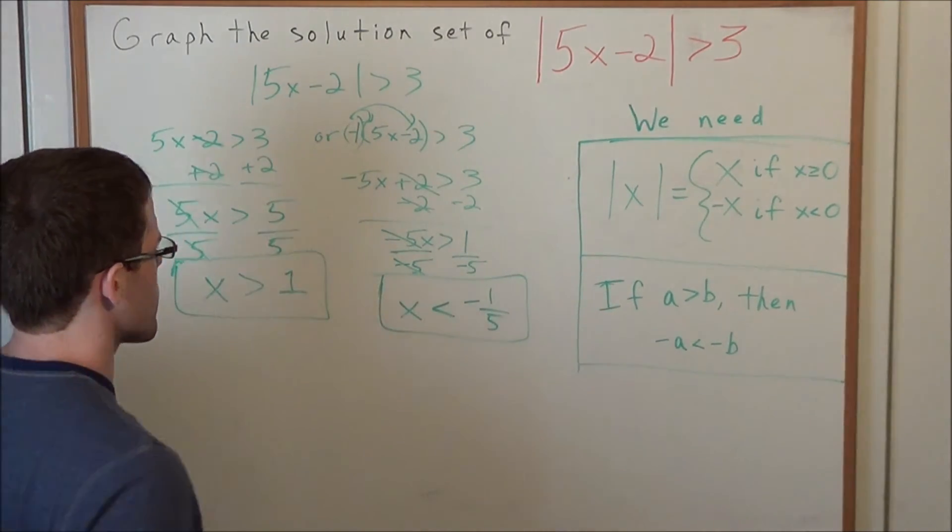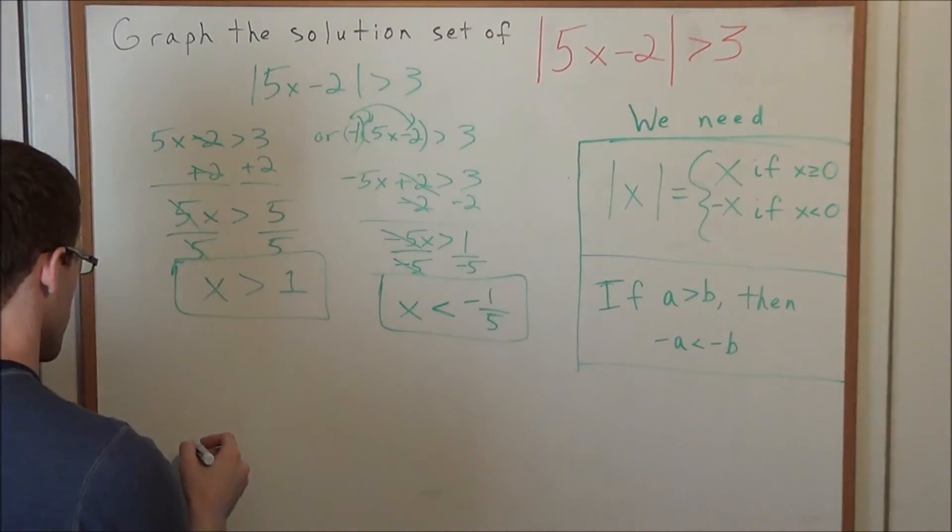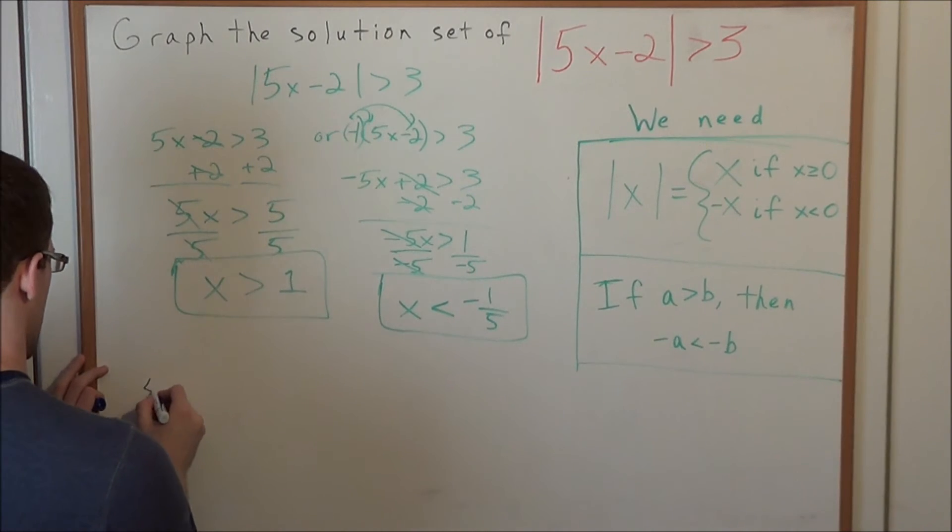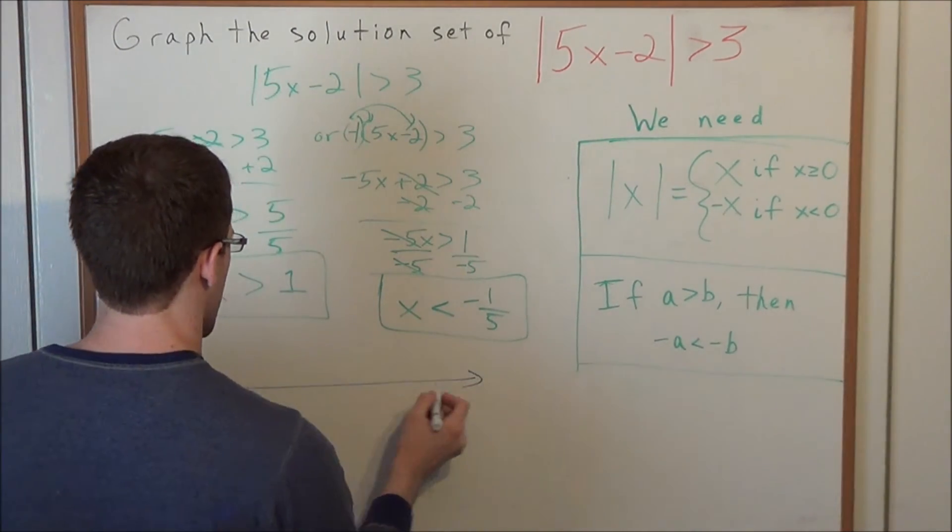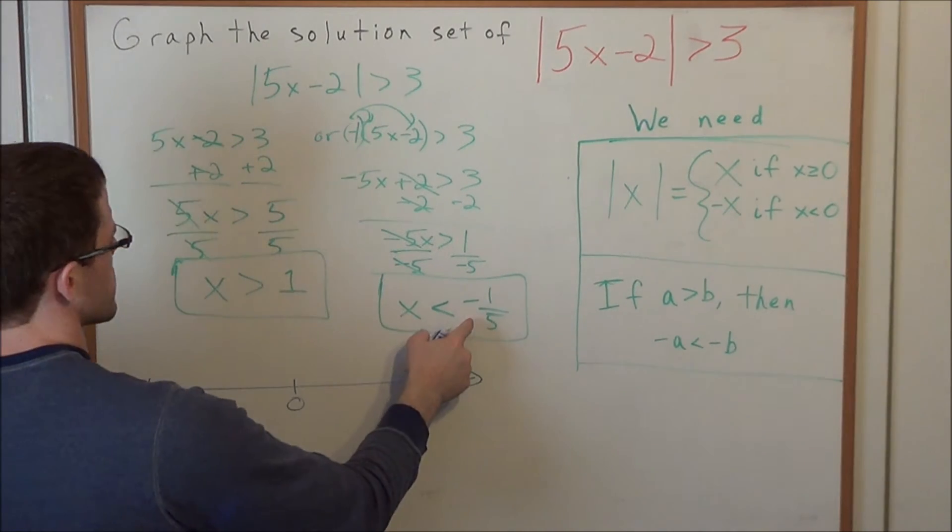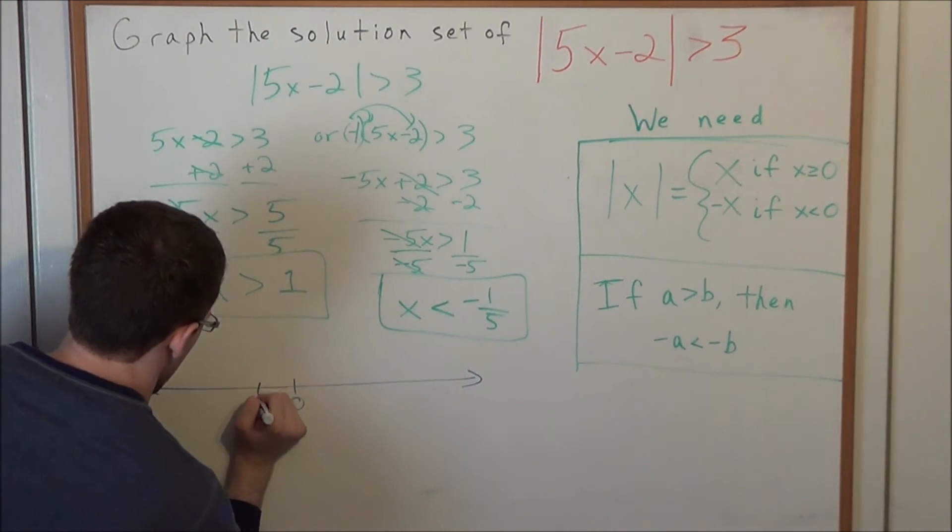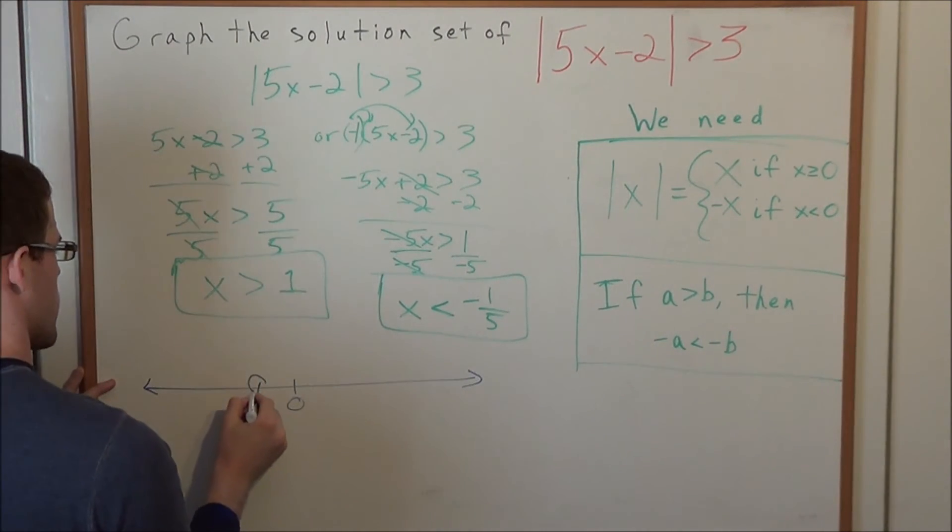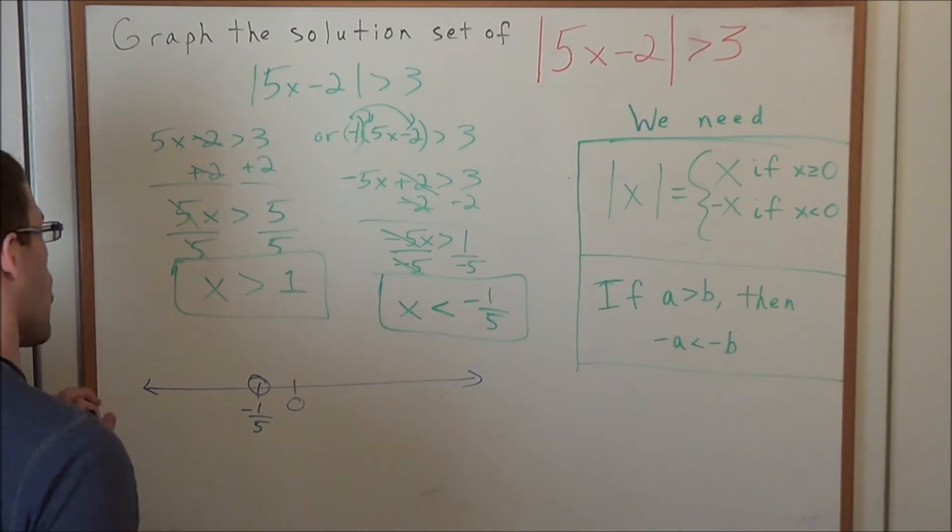So now to graph our solution, what we need to do is we go ahead and construct a number line. So we have our number line. And we can put some points around it, but really all that's important is our critical points. And we're looking at, let's say we call this negative 1 fifth. We go ahead and we make an open circle.